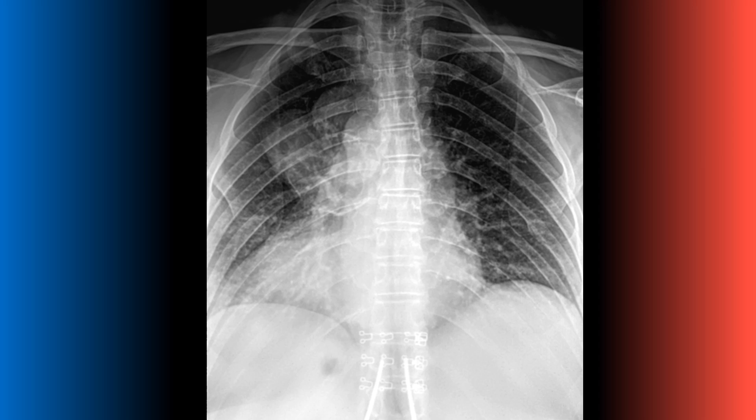On this frontal view of the thoracic spine, in the left hilar region of the chest you should see a large area of increased density that demonstrates no evidence of calcification. This was proven by CT scan to be bronchogenic carcinoma.